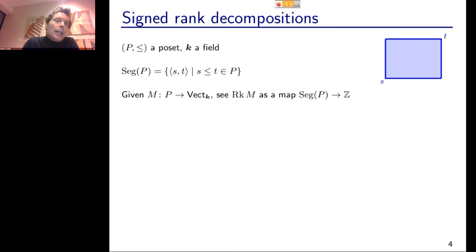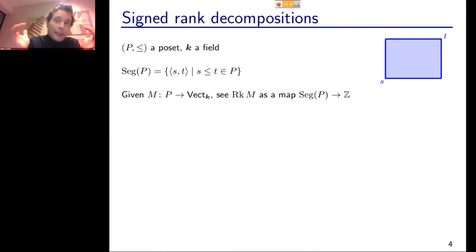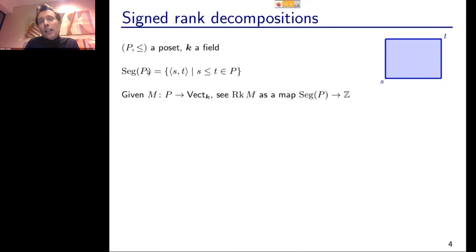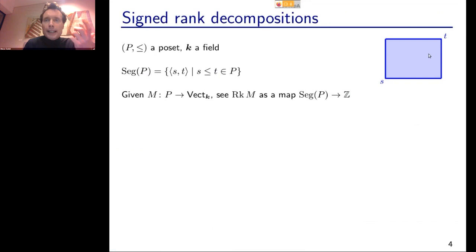Let me set up the mathematical framework. P is a fixed POSET, K is a field, and we look at the collection of all segments in that POSET — call it Seg(P). I will see the rank invariant itself as an integer-valued map from Seg(P), since the rank invariant is defined over every pair of comparable elements S and T, and to every such pair corresponds bijectively exactly one segment with S as minimum and T as maximum.